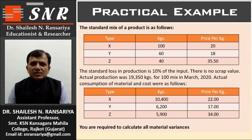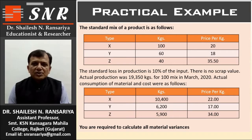Actual production was 19,350 kilograms for 100 mix in March 2020. Actual consumption of material and cost were as follows — Material X, Y, Z — kilograms: 10,400; 6,200; and 5,900. Price per kilogram: 22, 17, and 34.